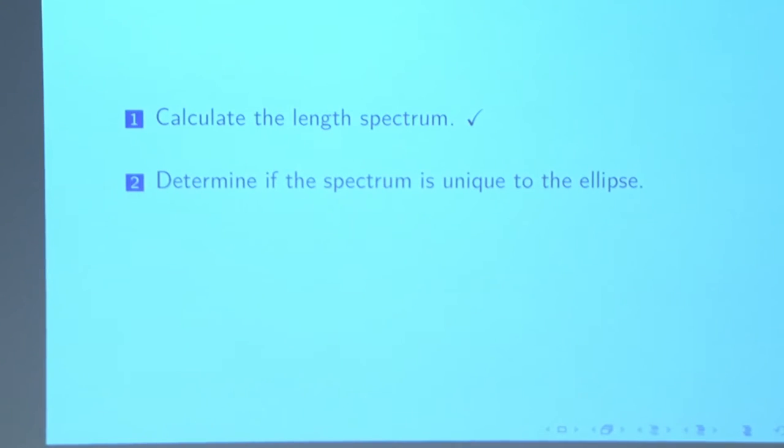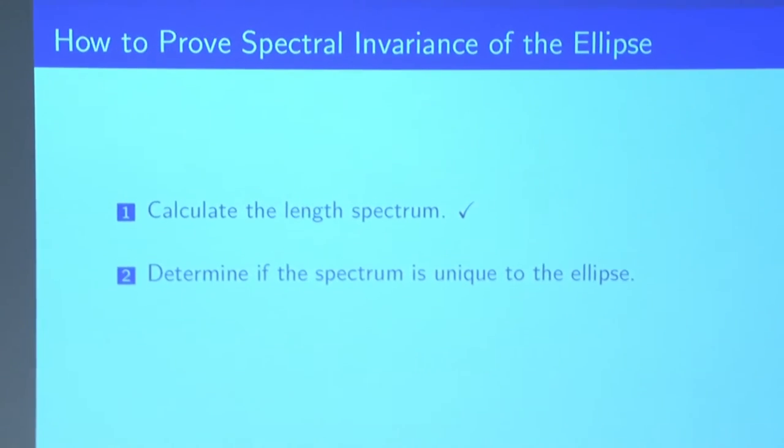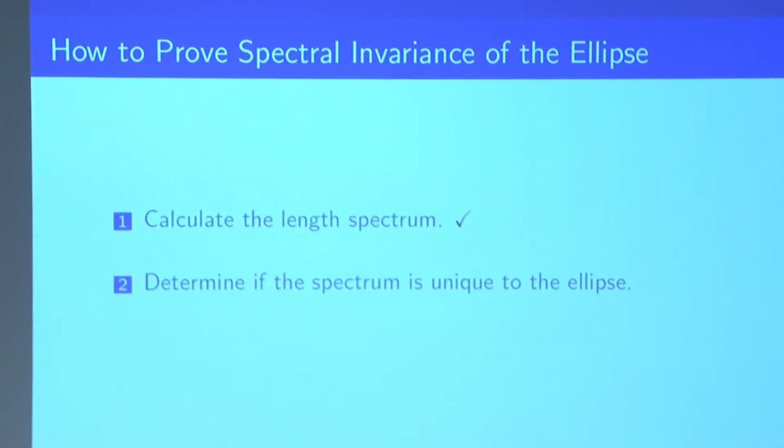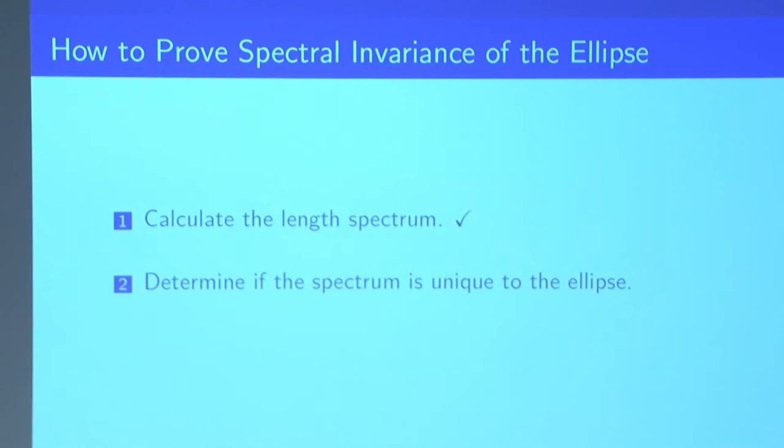So if we go back to what we originally wanted to do, we more or less finished our first step. Remember, we wanted to calculate the eigenvalue spectrum, but in effect, we did by calculating the length spectrum. So our next goal is to determine if the spectrum is actually unique to the ellipse, which turns out to be a much harder problem. The first step has actually yet to be done yet. No one has actually written down the length spectrum. And the second step is even harder.